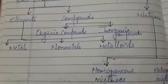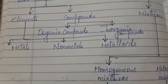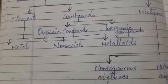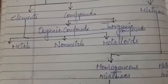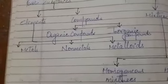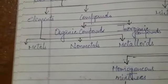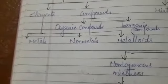Hello everyone, welcome back. Let us today study about classification of elements. Elements are classified into three types: metals, non-metals, and metalloids.